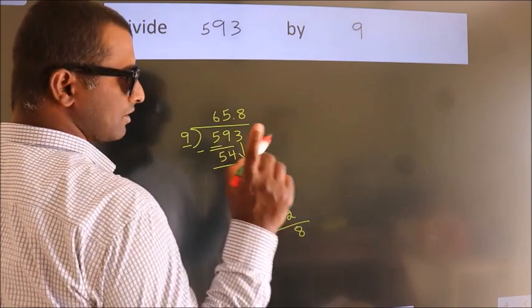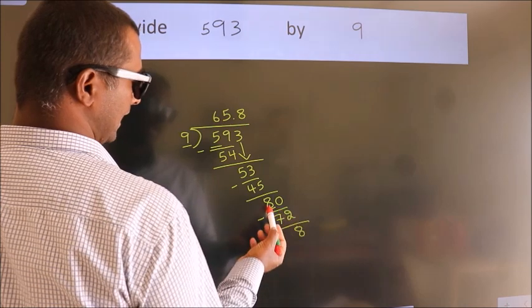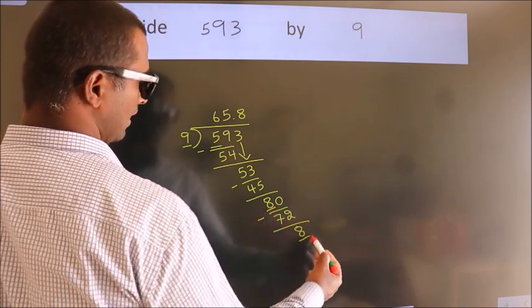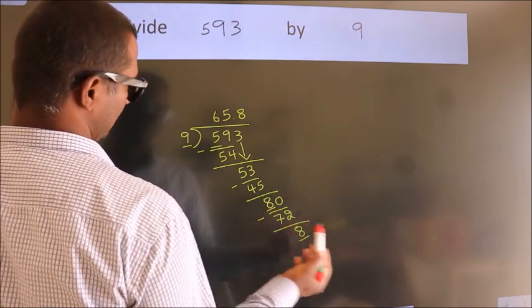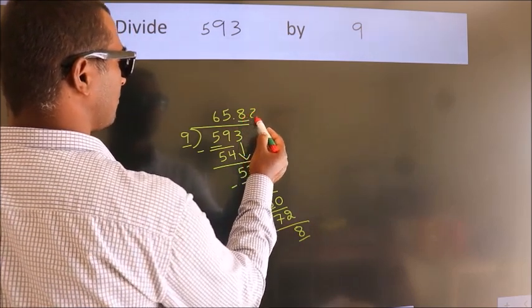Now you observe, here we had 8, and we got 8 again. That means this number keeps on repeating.